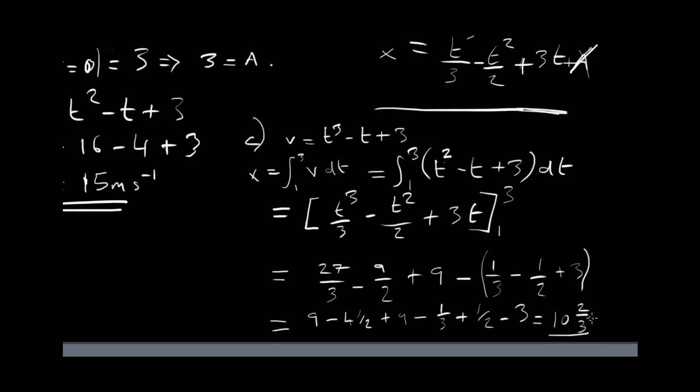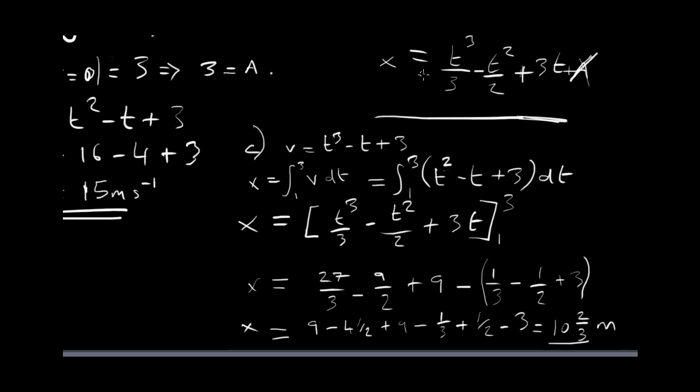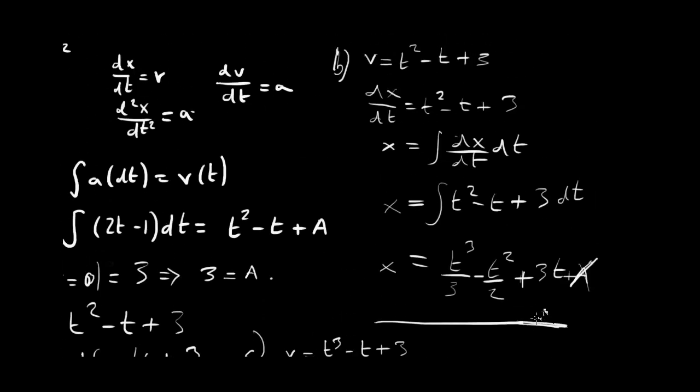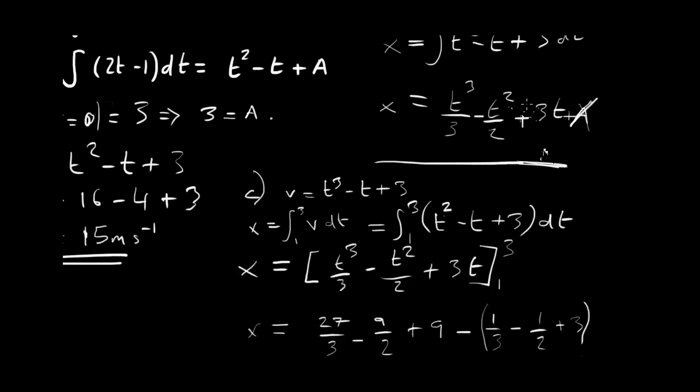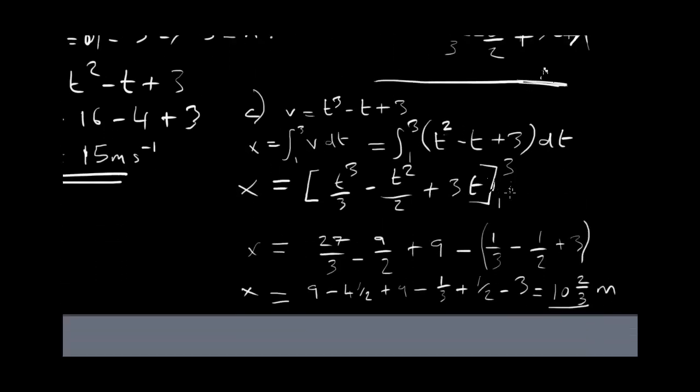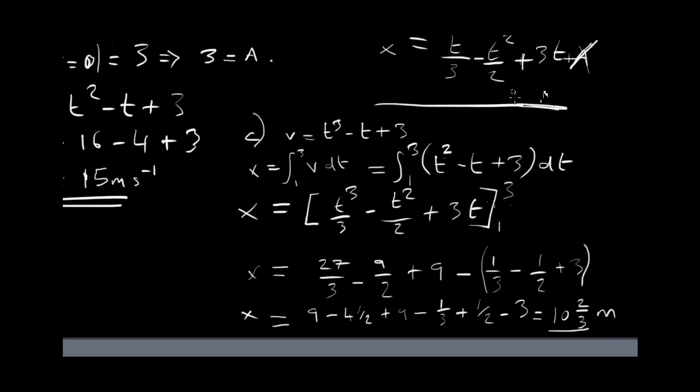So, that's in meters the displacement that this particle does between seconds 1 and seconds 3. So, I hope that makes sense and that's exactly what we would get if we did it here, if we just typed in 3 here and then subtracted it from the displacement of 1. You can see the similarity between both methods. In one of them we integrate it first and then we substitute the values in the final expression. In the other one we do it like a definite integral but there are really two ways of doing exactly the same thing.